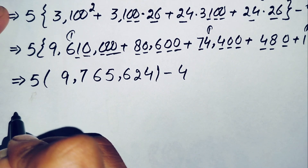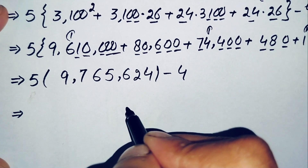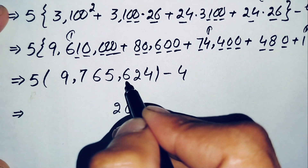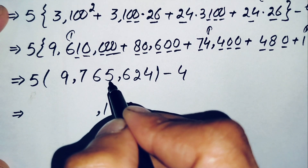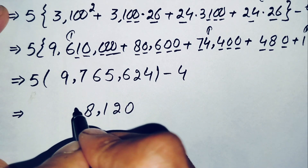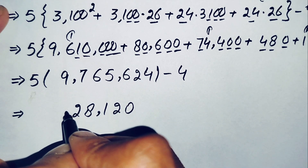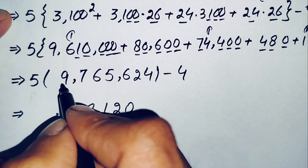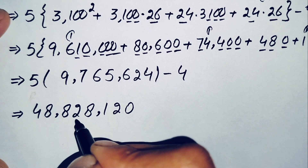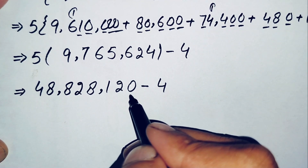Now we multiply 5 times 9,765,624. Starting from the ones position: 5 times 4 is 20, 5 times 2 is 10 plus 2 is 12, 5 times 6 is 30 plus 1 is 31, 5 times 5 is 25 plus 3 is 28, 5 times 6 is 30 plus 2 is 32, 5 times 7 is 35 plus 3 is 38, 5 times 9 is 45 plus 3 is 48. This gives 48,828,120, minus 4.